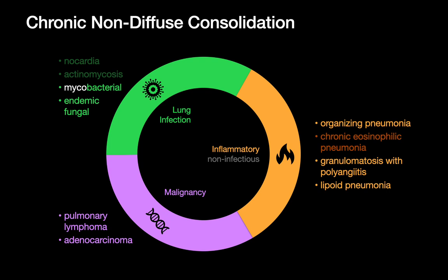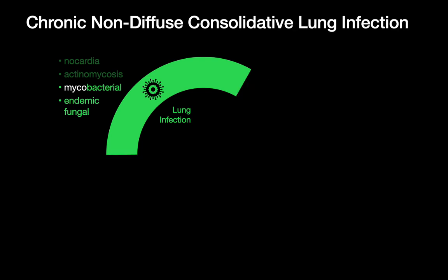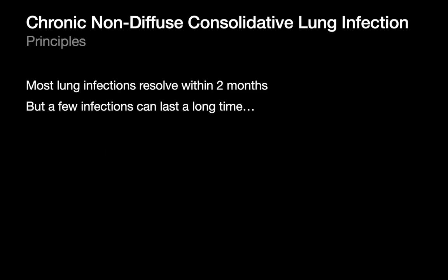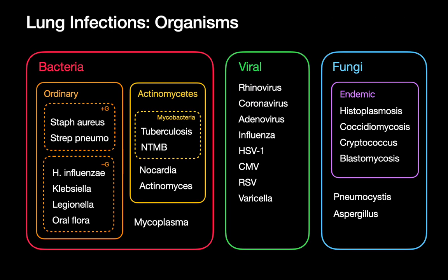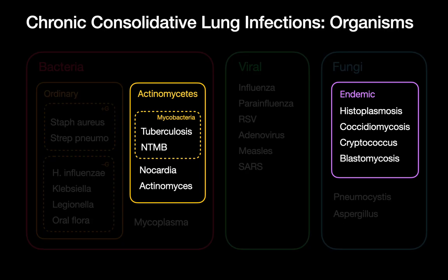Now let's do a deeper dive into each of these three categories, starting with lung infections. Most lung infections we encounter resolve in under two months; only a couple can last a long time and are considered chronic. If you look at the whole list of potential respiratory tract infections, it's only certain organisms that could be responsible for a chronic non-diffuse consolidation picture.